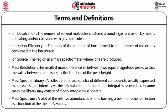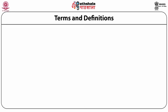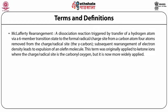Mass spectrum: a plot of the relative abundances of ions as a function of their m/z values. McLafferty rearrangement: a dissociation reaction triggered by transfer of a hydrogen atom via a six-membered transition state to the formal radical charge site, from a carbon atom four atoms removed from the charge-radical site (the gamma carbon). Subsequent rearrangement of electron density leads to expulsion of an olefin molecule. This term was originally applied to ketone ions where the charged radical site is the carbonyl oxygen, but is now more widely applied. Examples of McLafferty rearrangement will be given when discussing fragmentation of carbonyl compounds in subsequent modules.